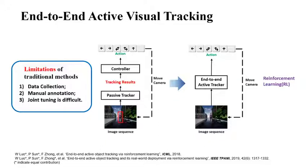Traditional active trackers usually consist of two modules: a passive tracker that takes an image sequence as input and detects the target in each frame, and a camera motion controller that outputs the camera action according to the target's position — keeping the target centered in the view and maintaining roughly constant distance to it.